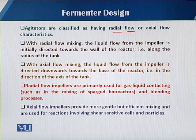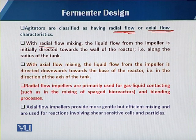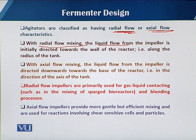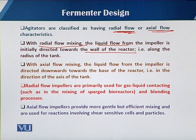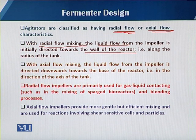One is the radial flow category and the other is the axial flow category. As concerns radial flow mixing, that is when the liquid flow from the impeller is initially directed toward the wall of the reactor — when there is movement of the impeller, the fermentation media is first pushed toward the wall of the fermenter, parallel to the radius of the fermenter, which is why it is known as radial flow. As concerns axial flow, the impeller pushes the medium toward the bottom, parallel to the axis.